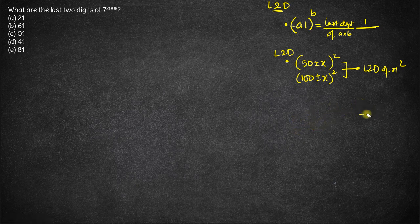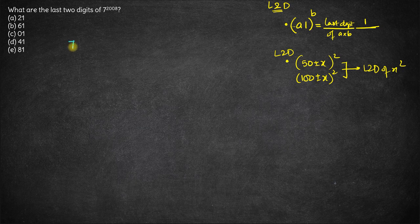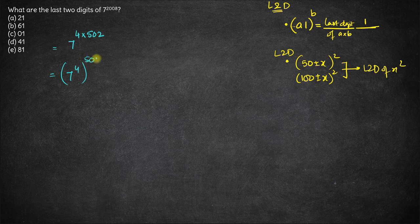These are the two concepts that we'll be using. So let's start with 7 to the power 2008. Now, 7 is an odd number, and we know 7 to the power 4 will give us the last digit as 1. So I can write 7 to the power 2008 as 7 to the power 4, times 502, which is 7 to the power 4, whole raised to the power 502.